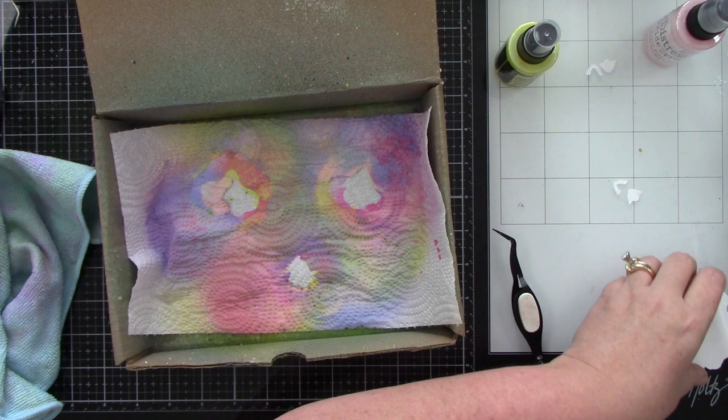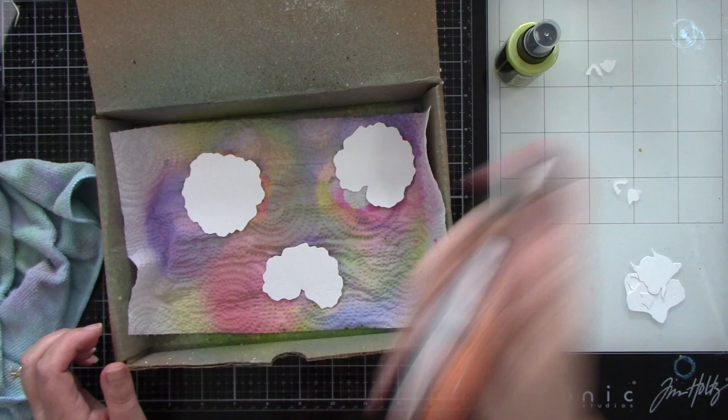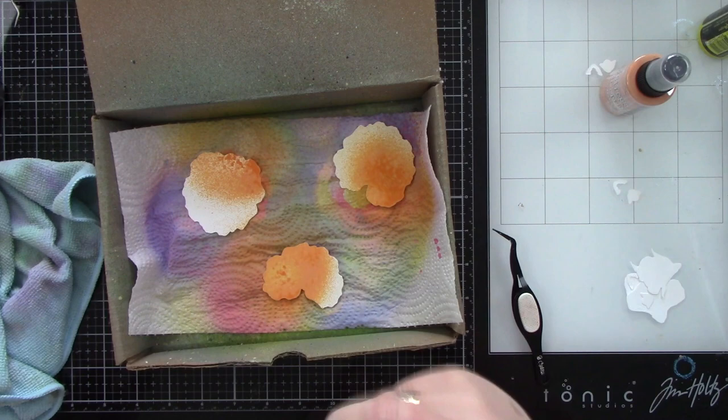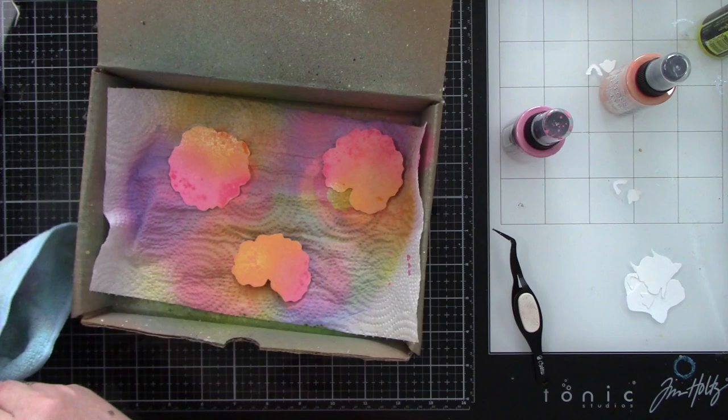This is my favorite color combination right here. And I think depending on which way you want it to lean, you could do more or less of a color. I am using Picked Raspberry and Spiced Marmalade, and it's so pretty.